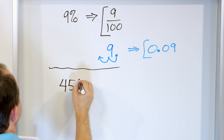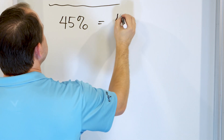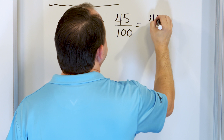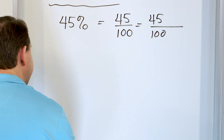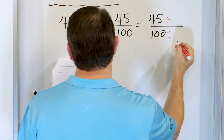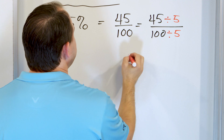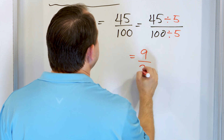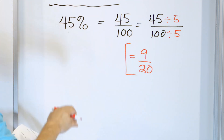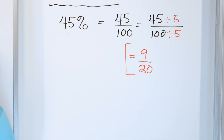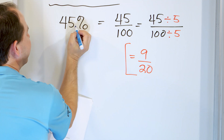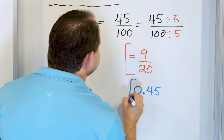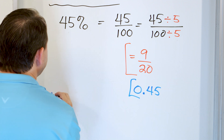Let's look at 45%. As a fraction: 45 out of 100. We simplify by dividing top and bottom by 5. 45 divided by 5 is 9, and 100 divided by 5 is 20, giving 9 twentieths. For the decimal: move the decimal two spots to the left to get 0.45. So 0.45 is the decimal equivalent and 9 twentieths is the fractional equivalent of 45%.